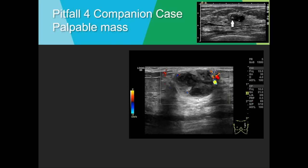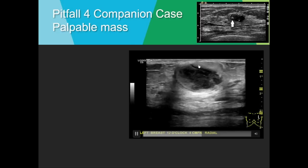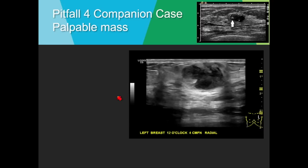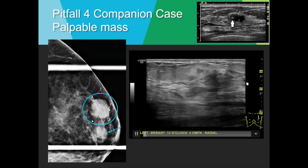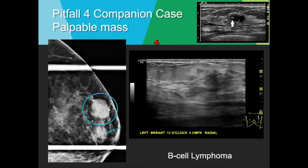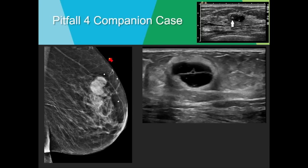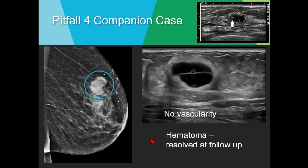Another mixed echogenic mass with a lot of internal vascularity in the echogenic components. Without that vascularity, this could look like a hematoma. The mammogram shows a very dense palpable mass with a second mass visible on the clip edge. This turned out to be a B-cell lymphoma. A final companion: an almost identical-looking case — very dense mammographic mass — in a woman with bruising and trauma history. There was no internal vascularity, and this completely resolved on follow-up, so we did not biopsy — consistent with a hematoma.